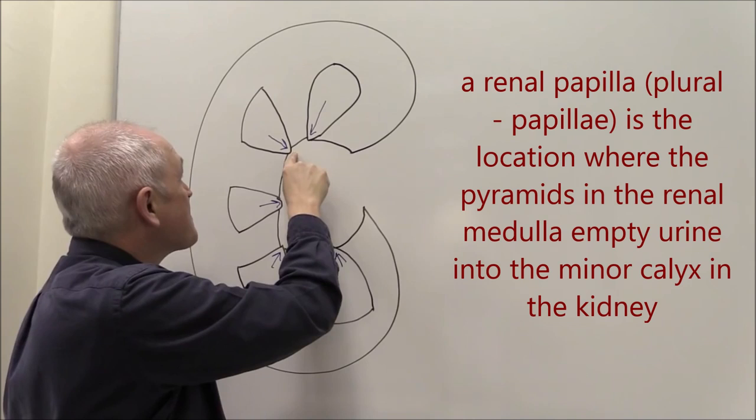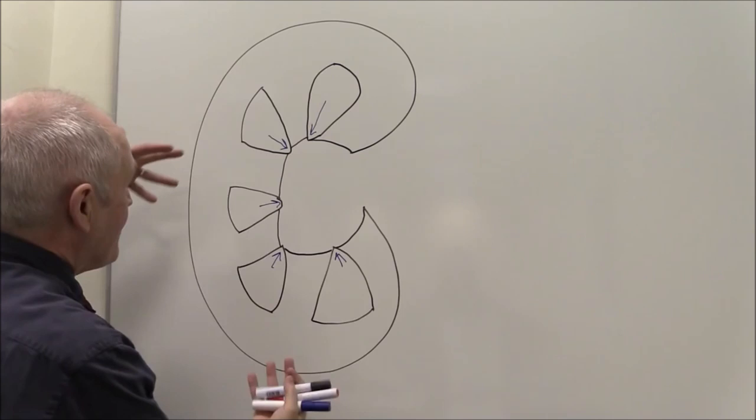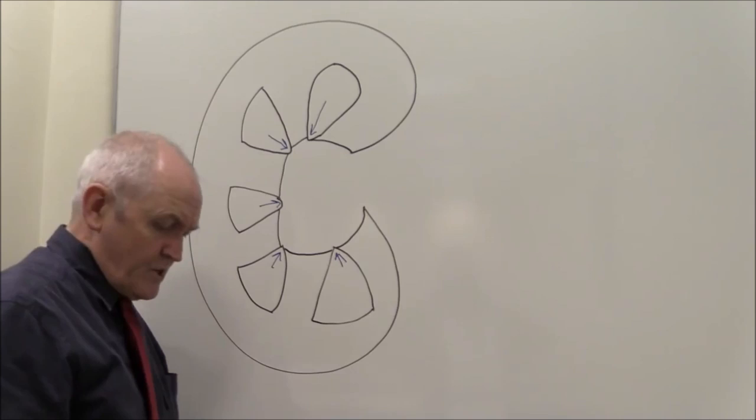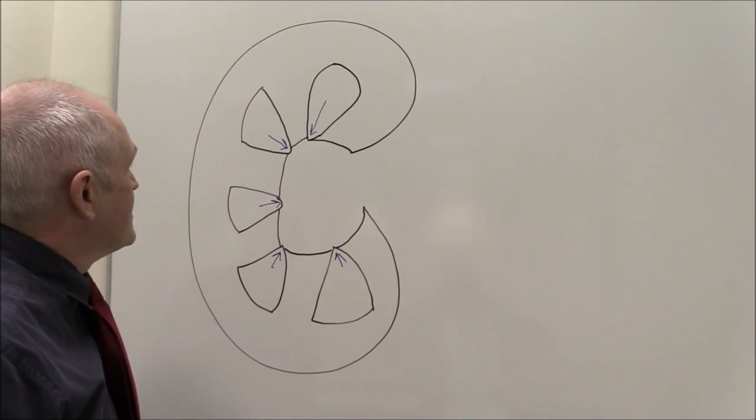These nipple shaped papillae. Papillae is nipple shaped. So there's papillae there, there's papillae there. So the urine is actually coming out. Having been produced in the kidney it's coming out in this area here. And of course we don't want urine leaking all over the place so we have to have some way of collecting it.